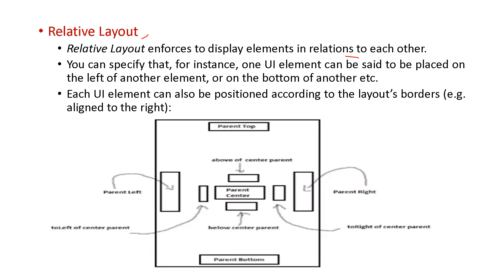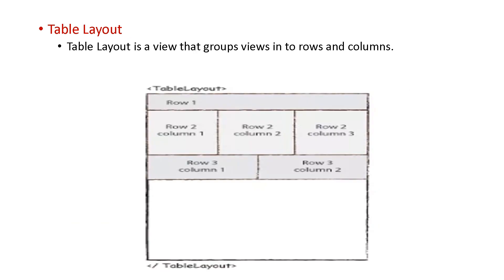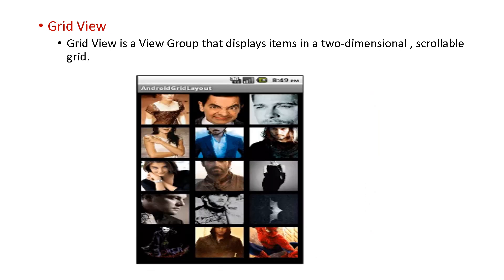In relative layout, one UI element can be set to be placed on the left of another element or at the bottom of another — that is the relative positioning. Next is table layout, which displays views in a table format with rows and columns. Next is grid view, which is a view group that displays items in a two-dimensional scrollable grid — somewhat similar to a collage.